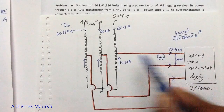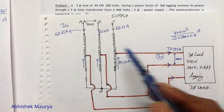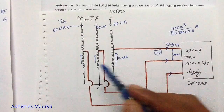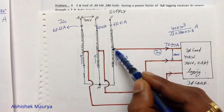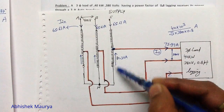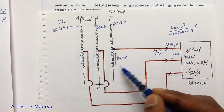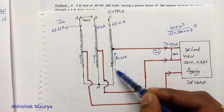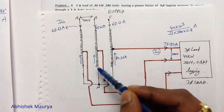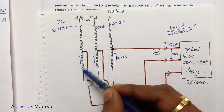Since both I0 and I_input are in the same phase, the angles are not needed when applying KCL. Applying KCL at the junction point, the current in the transformer winding is 75.97 − 65.61 = 10.36 amperes. This same 10.36 ampere current flows in all three windings. The input supply current of 65.61 amperes flows in the upper winding sections of all three phases.